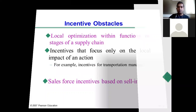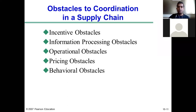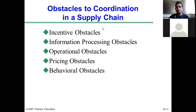The obstacles to achieving coordination in a supply chain include incentive obstacles, information processing obstacles, operational obstacles, pricing obstacles, and behavioral obstacles. These are the problems, and managerial levers are the solutions to these problems. After our discussion on obstacles to coordination, we started discussing the managerial levers to achieve coordination — that is, how to overcome these problems and achieve coordination in the supply chain.